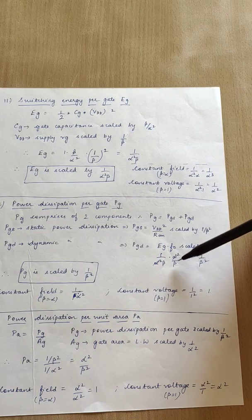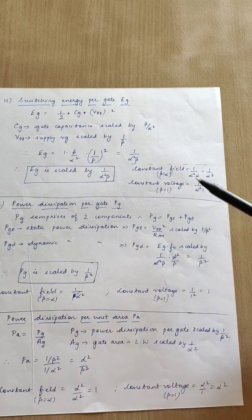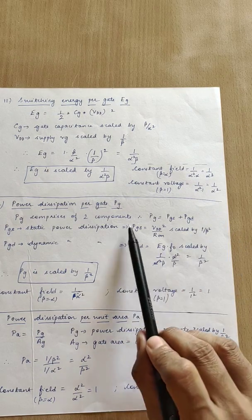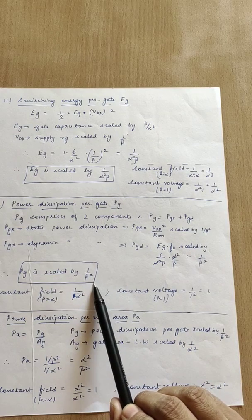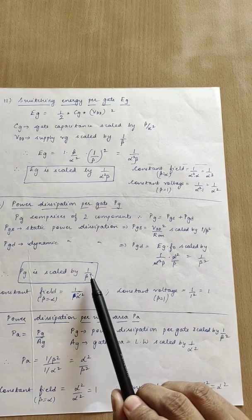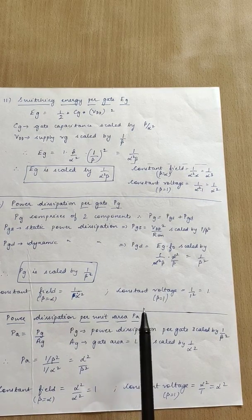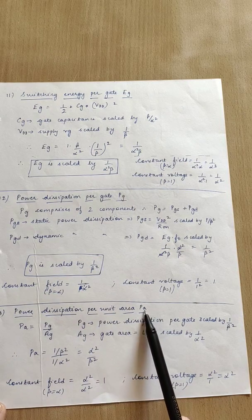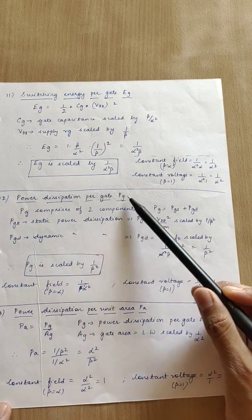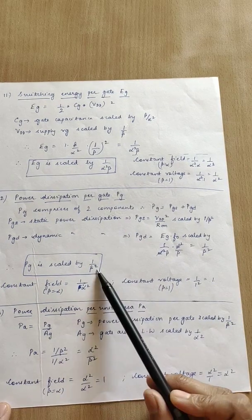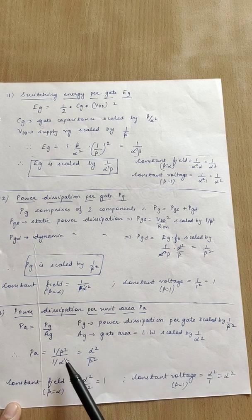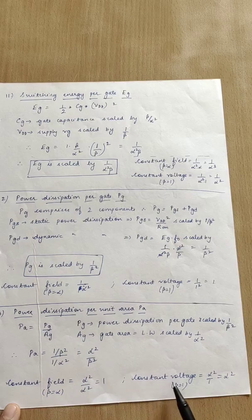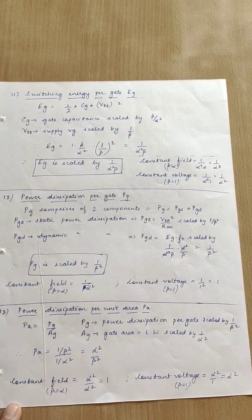Next: power dissipation per gate P_g has two components. Static power: V_DD²/R_on — V_DD² scales as 1/β² and R_on scales as 1, giving 1/β². Dynamic power: E_g × f₀ — substituting the derived values also gives 1/β². Both components scale as 1/β², so the overall P_g scales as 1/β². Finally, power dissipation per unit area P_a = P_g / area = (1/β²)/(1/α²) = α²/β². Substitute β = α or β = 1 to find Constant Electric Field and Constant Voltage values. That concludes the session on scaling.